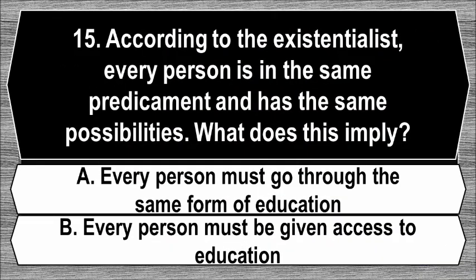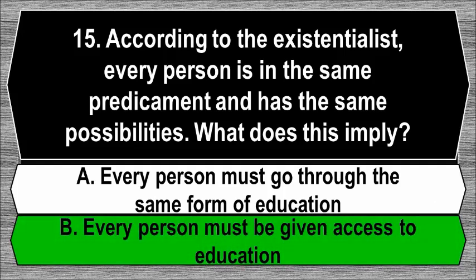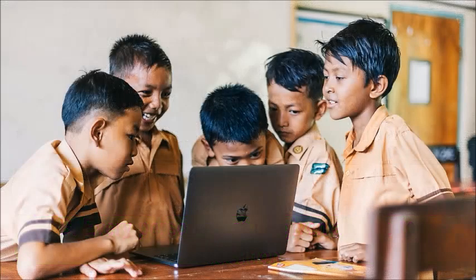Question 15. According to the existentialist, every person is in the same predicament and has the same possibilities. What does this imply? A. Every person must go through the same form of education. B. Every person must be given access to education. Everyone has the right to education. The objectives of education include the full development and dignity of each person, the ability to participate effectively in society, and the strengthening of respect for human rights.